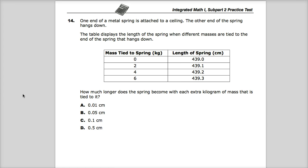The question says one end of a metal spring is attached to a ceiling, the other end of the spring hangs down. So you've got your ceiling up here, and your spring's hanging down there.